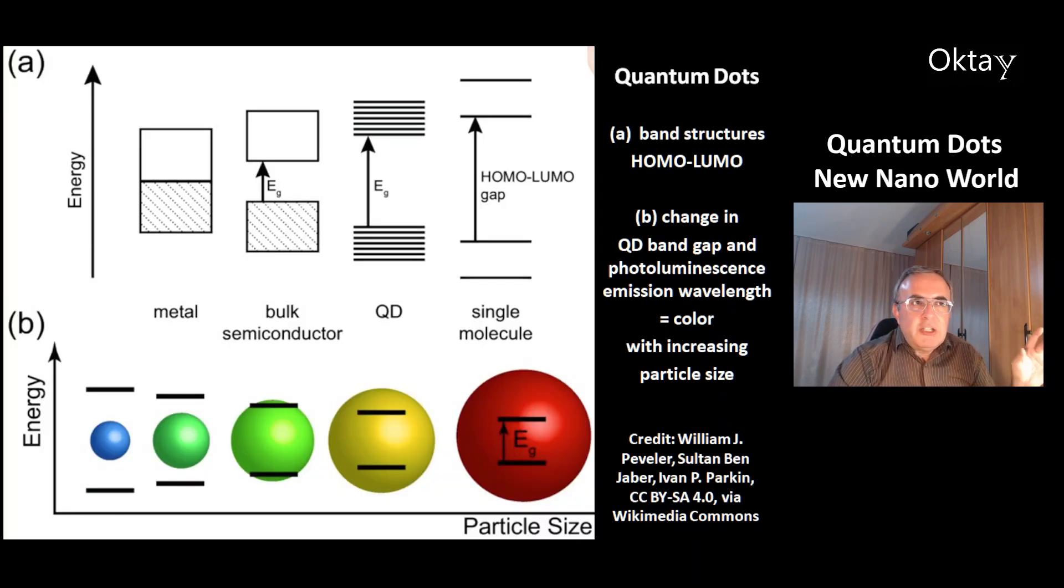And this is a picture of the energy levels of quantum dots to compare to other materials. At the left is a top picture, that's metal. This is energy bands that overlap. Second is the bulk semiconductor with its small energy gap.